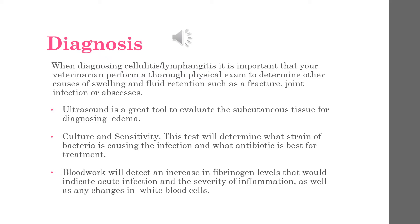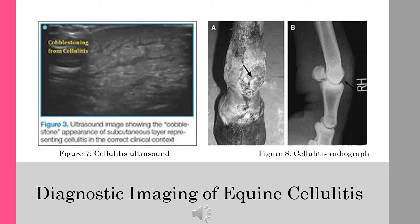These are some examples of a cellulitis ultrasound. On the left you see an ultrasound image showing a cobblestone appearance of the subcutaneous layer, indicating cellulitis is present. Also shown is a radiograph of an animal with cellulitis.